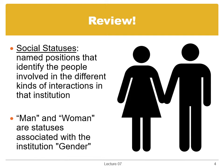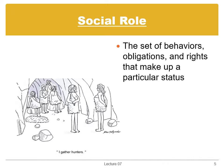Statuses are social positions that identify the people involved in the different kinds of interactions in that institution. Man and woman are both statuses that are part of the institution of gender. Every person in society occupies many statuses simultaneously, but different statuses are relevant in different situations. A role is a set of behaviors, obligations, and rights that make up a particular status. For example, the status of father comes with the obligation to raise children, the right to make decisions for them, and it implies certain behaviors like working to provide food and shelter. Much of what we're talking about here will have to do with gender roles.